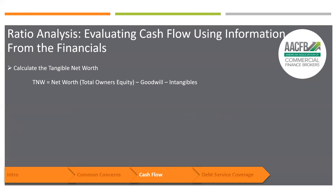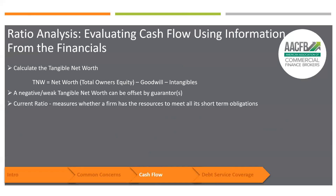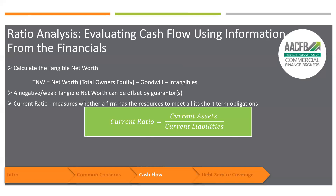The tangible net worth of a company is the total of the owner's equity minus goodwill and intangibles. Most companies look at tangible net worth — they don't look at goodwill and intangibles. A negative or weak tangible net worth can be offset by good guarantors. Looking at current ratios: a current asset is anything that can be liquidated in one year, and a current liability is anything that needs to be paid in one year. The current ratio is the current assets over the current liabilities.